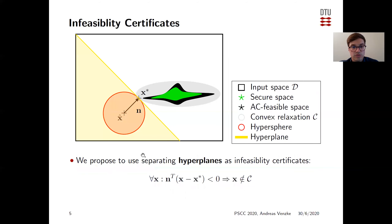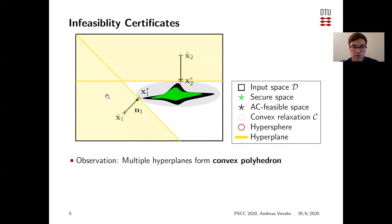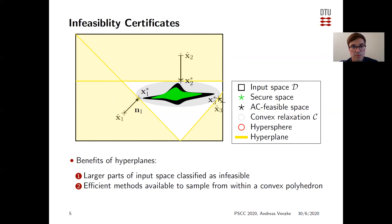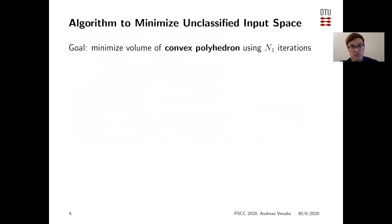Here we propose to use separating hyperplanes as infeasibility certificates instead. All operating points on one side of the hyperplane are guaranteed to be not secure. Using multiple hyperplanes, these form a convex polyhedron, so the unclassified input space is characterized by a convex polyhedron. The benefit of hyperplanes over hyperspheres is that larger parts of the input space are classified as infeasible, and we have efficient methods to sample from within the convex polyhedron. Based on these insights, we propose an algorithm to minimize the unclassified input space — equivalently minimizing the volume of the convex polyhedron — up to an upper number of N1 iterations.